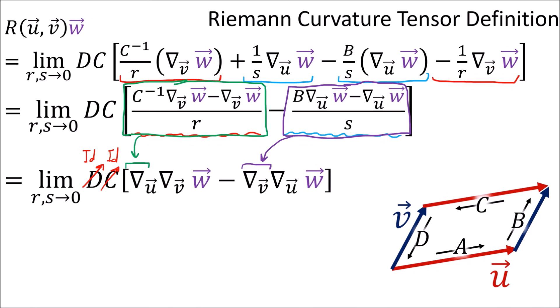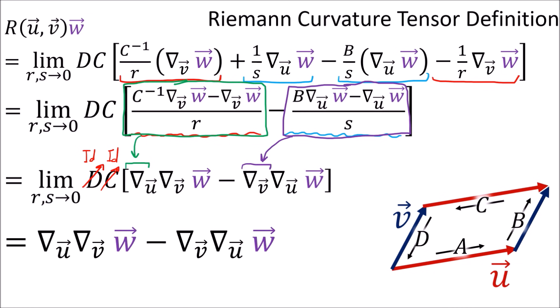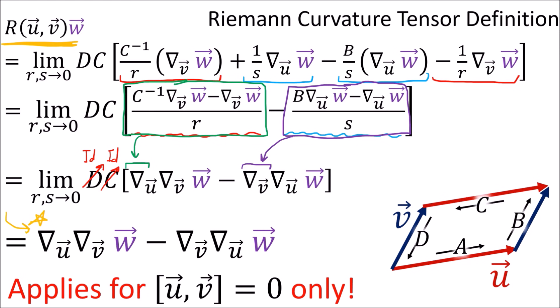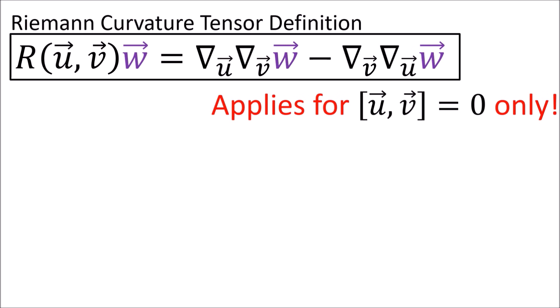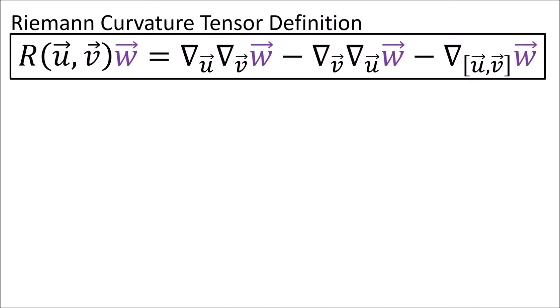So the formula for parallel transporting vector w along a parallelogram is the difference of the two covariant derivatives along u and v applied to w. However, this formula works fine only when the Lie bracket of u and v is zero. When the Lie bracket is non-zero, we actually need an extra third term — subtracting the covariant derivative of w in the direction of the Lie bracket of u and v.